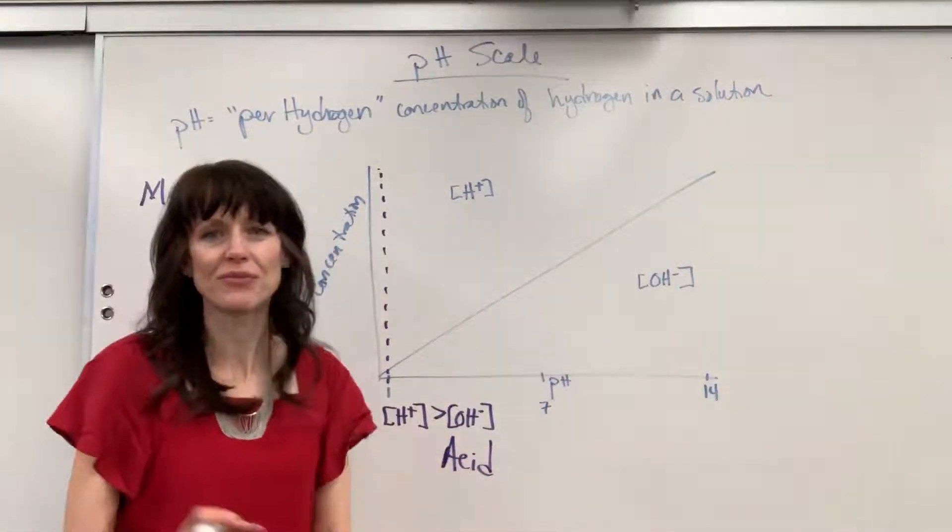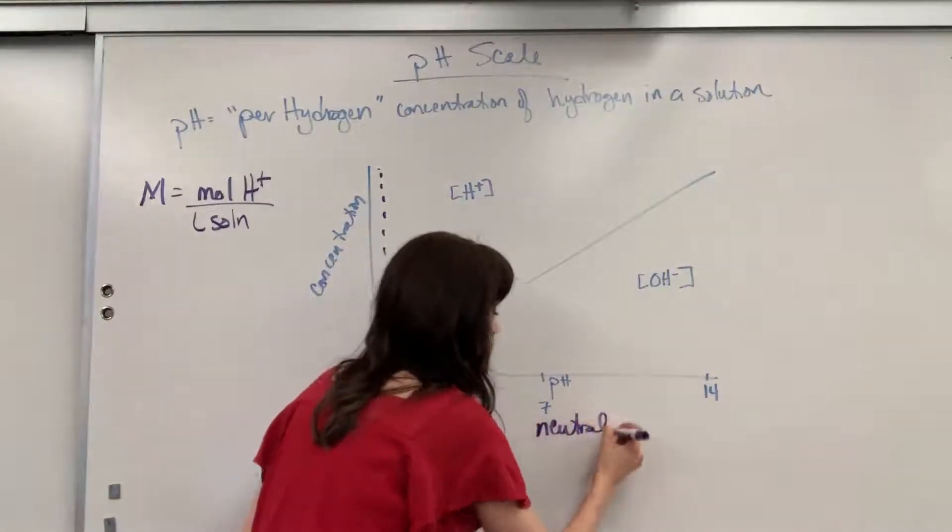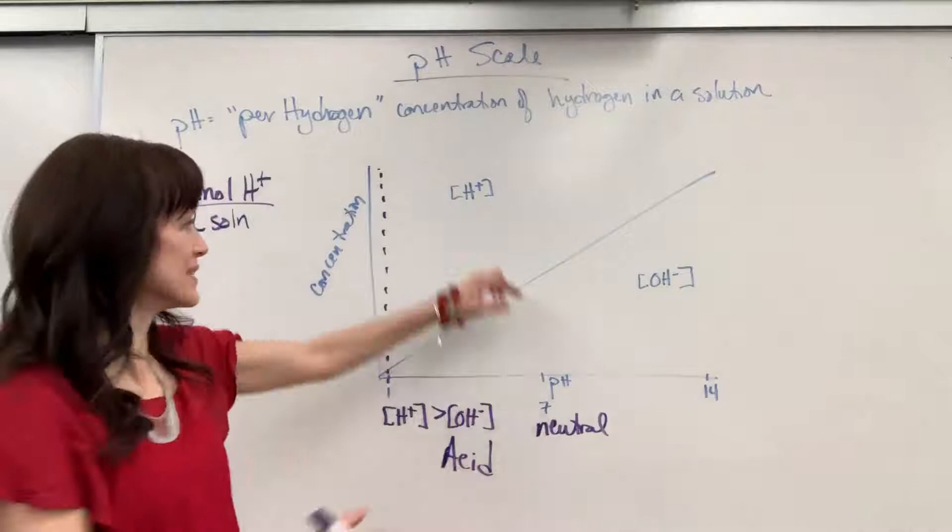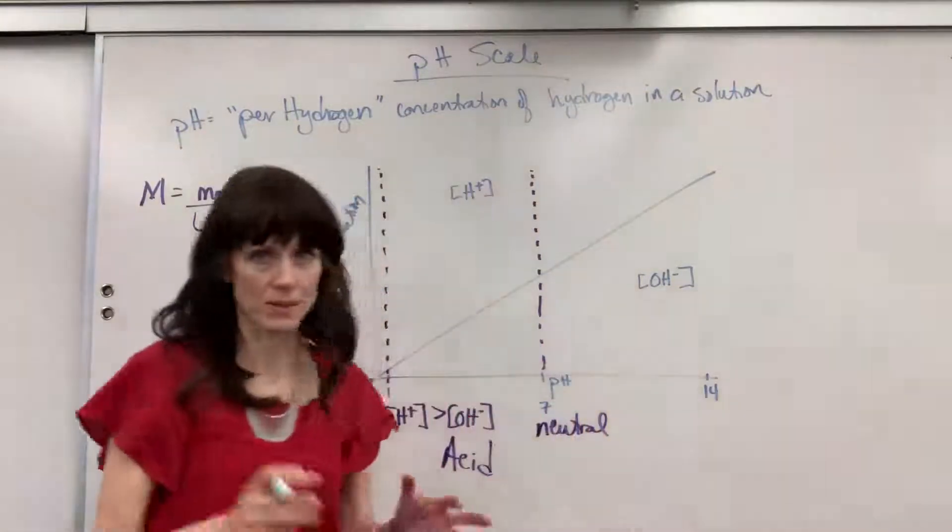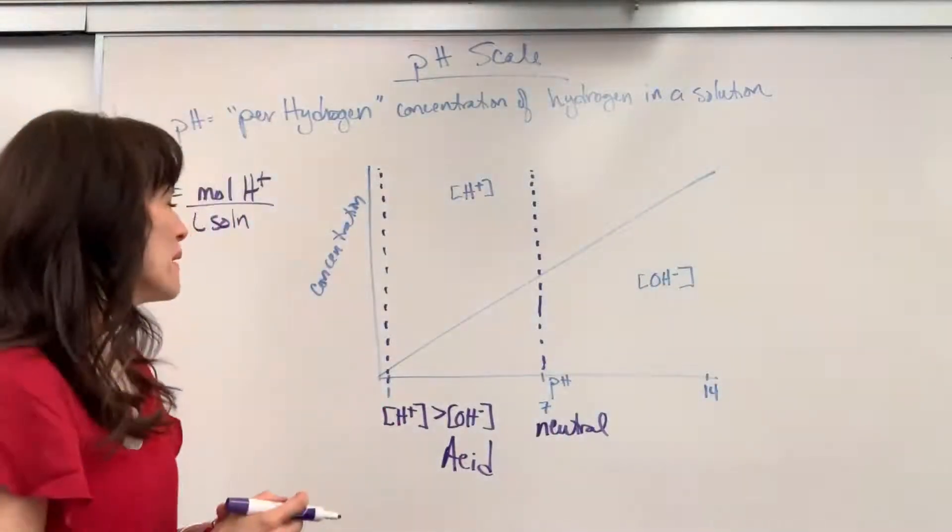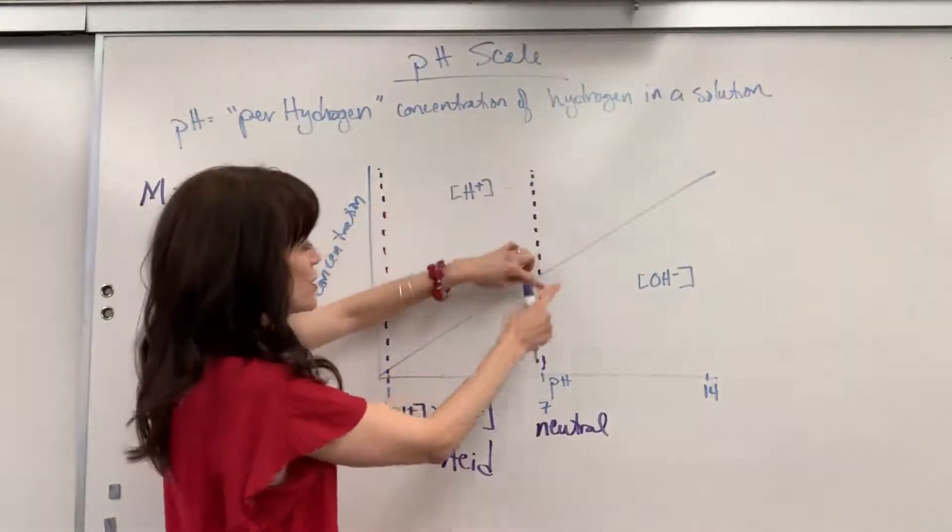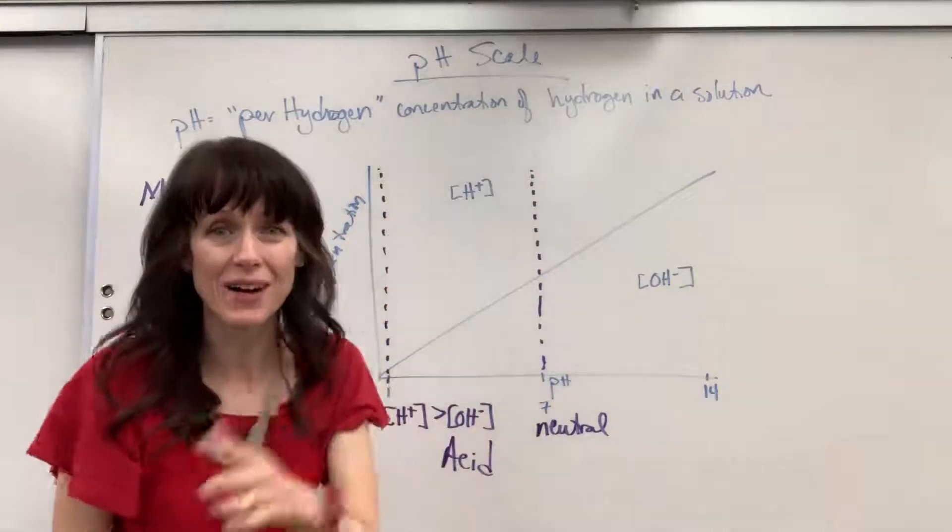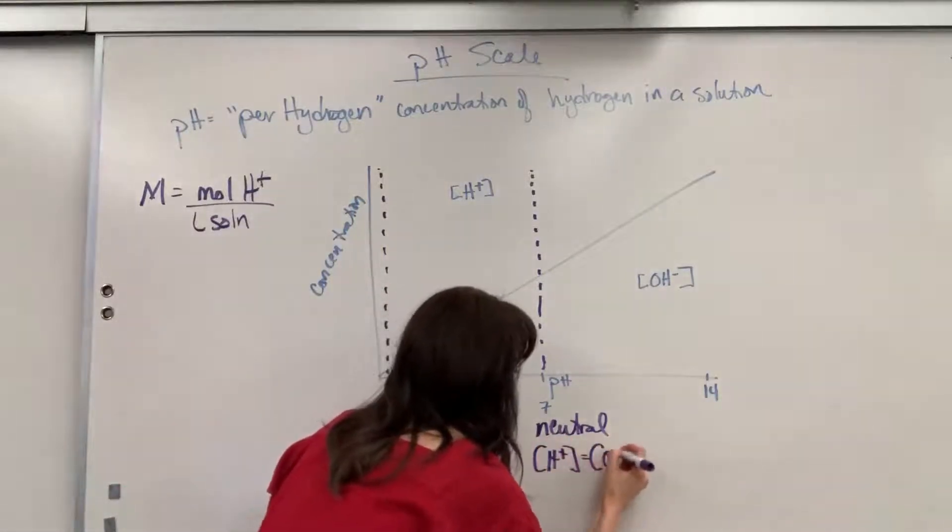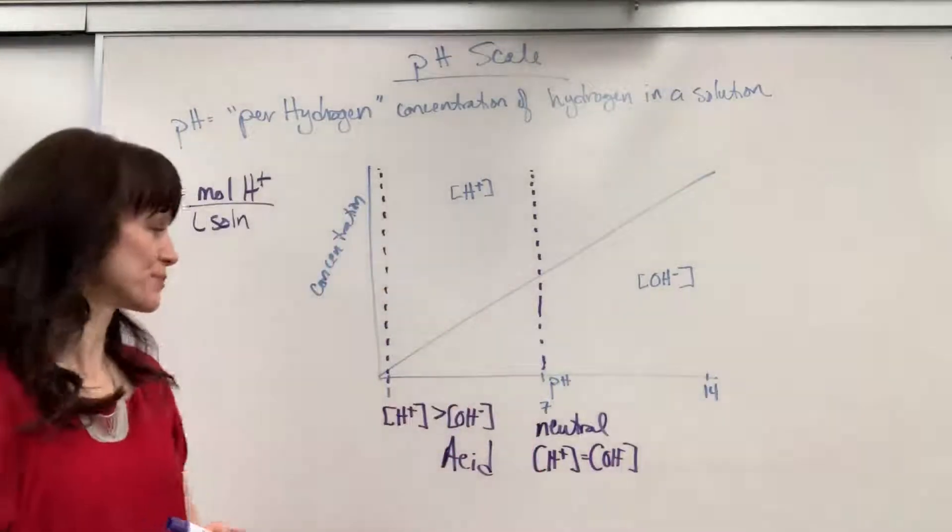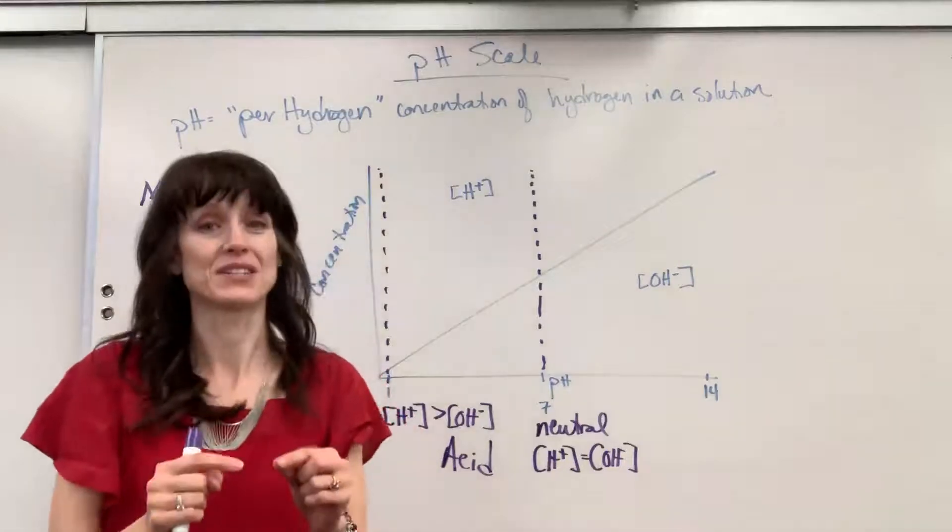Now pH of 7, very beautiful. This is going to be neutral. That will be neutral. So what do you think neutral means? pH of 7 means that the hydrogen concentration equals the hydroxide concentration. So we're going to have hydrogen equals hydroxide. So spot on neutral, those amounts are equal. pH of 7.